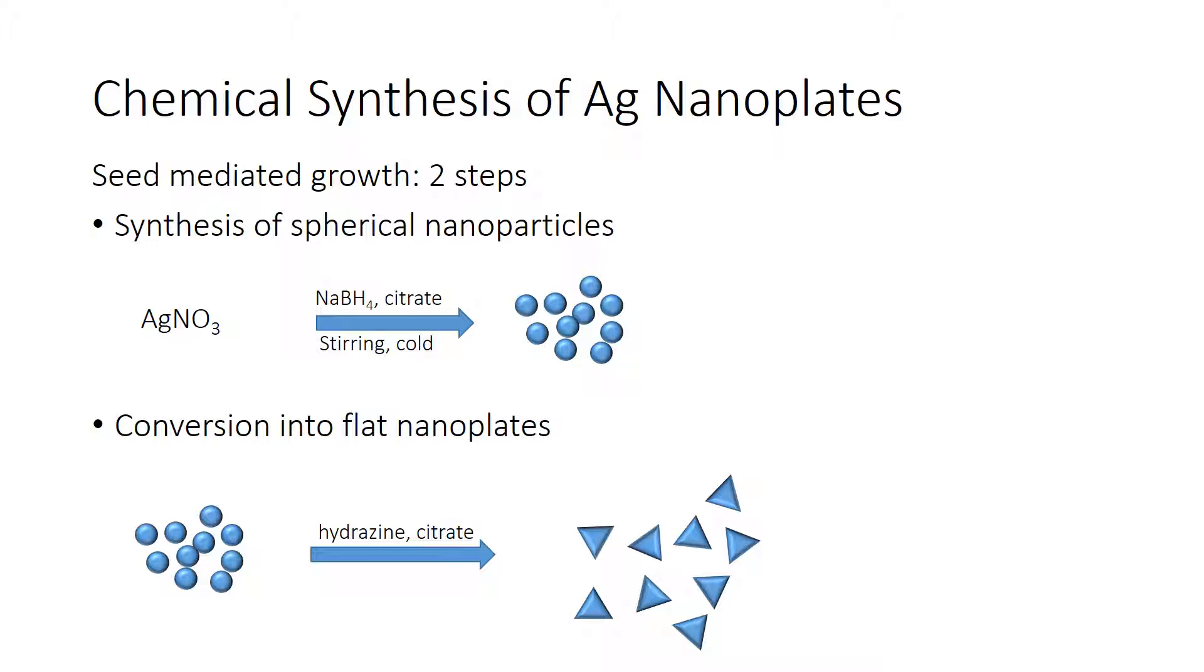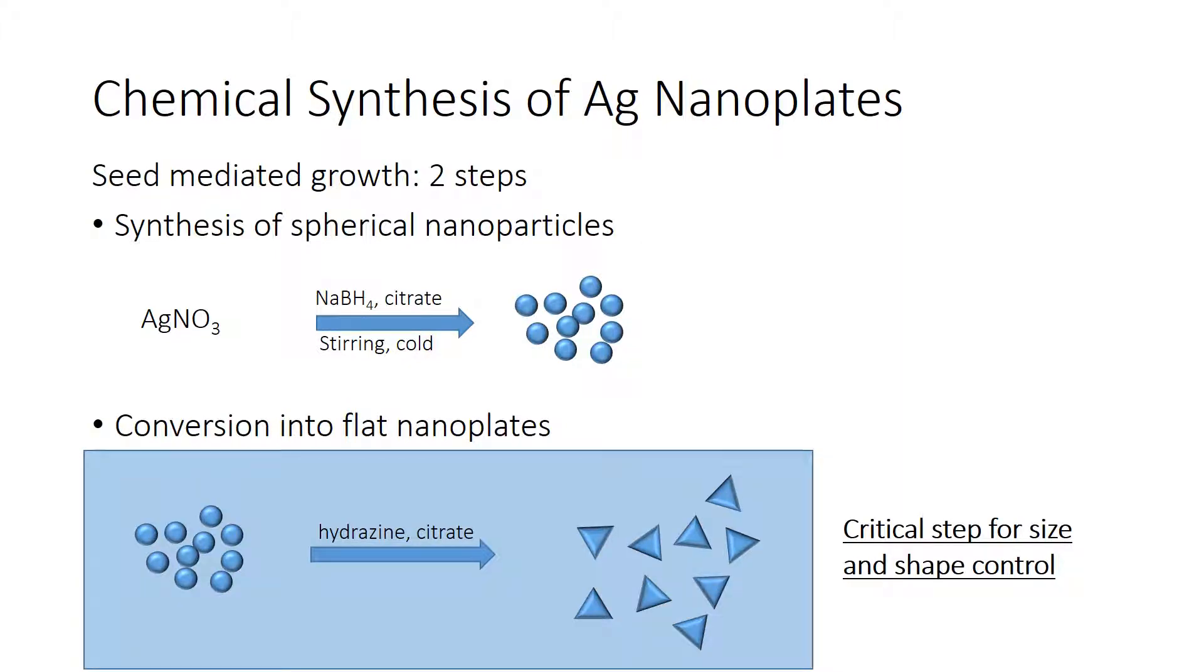The second step is the conversion into flat nanoplates. This happens with hydrazine and citrate. In this second step, spherical nanoparticles are converted into triangular nanoplates. This second step is a critical one for achieving size and shape control.